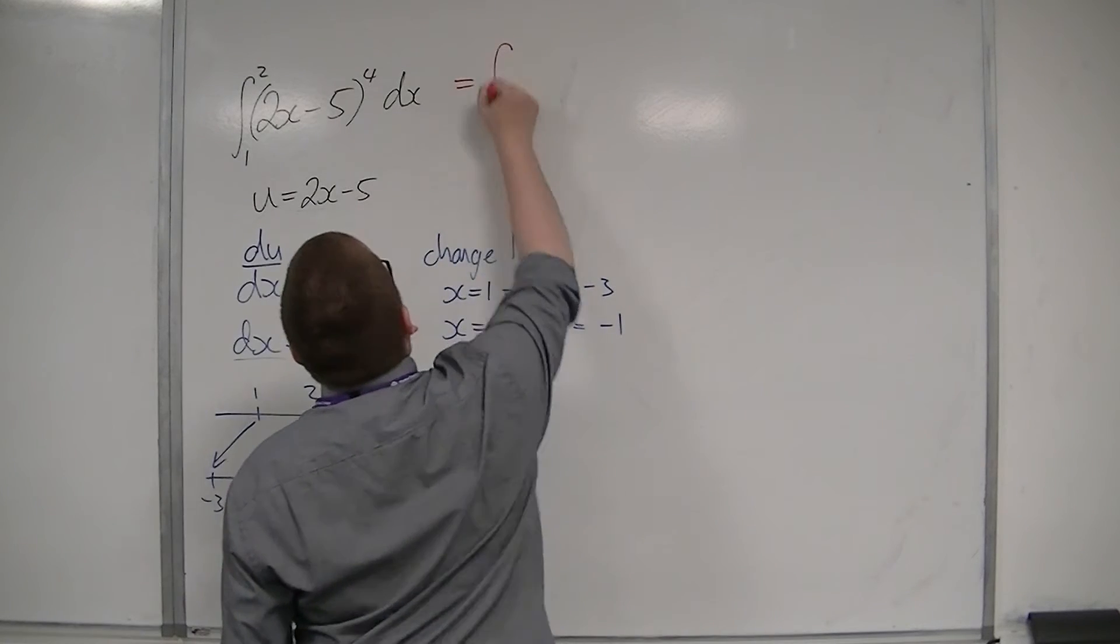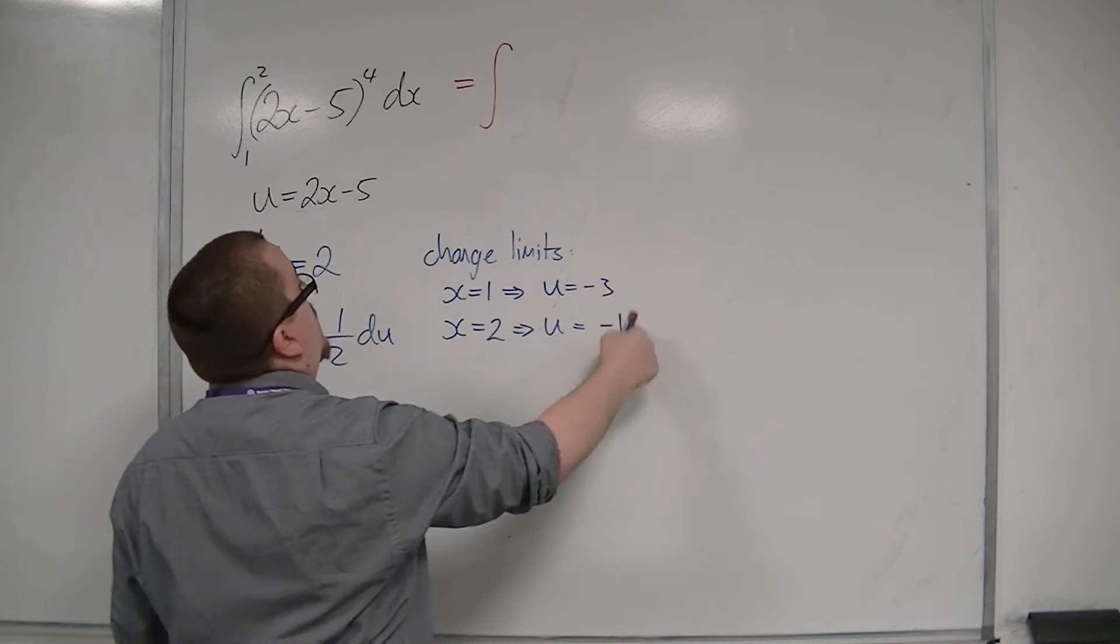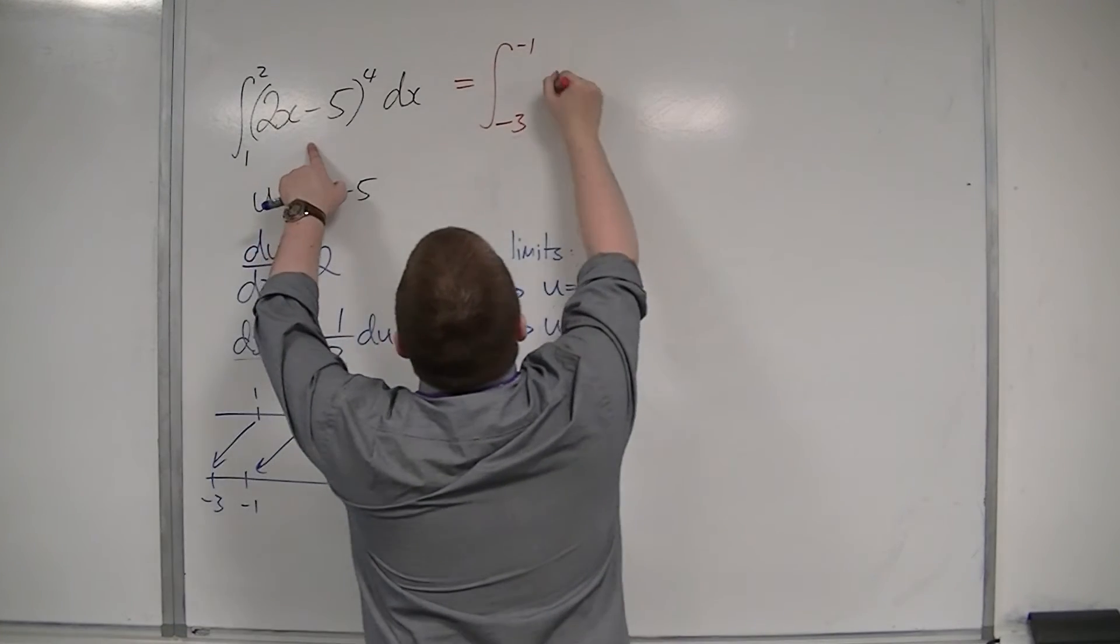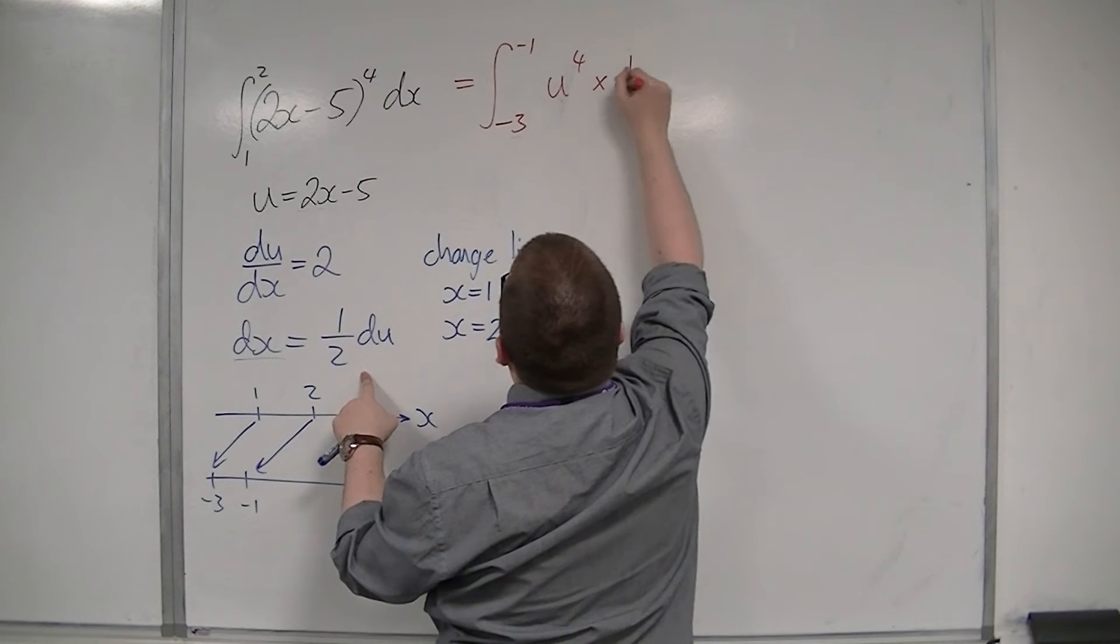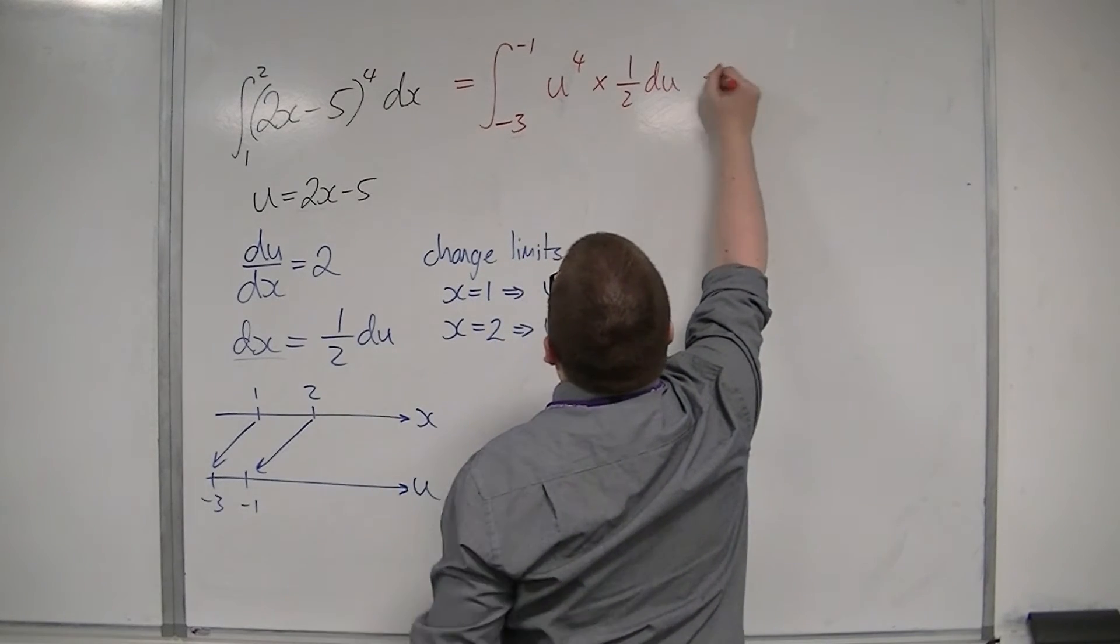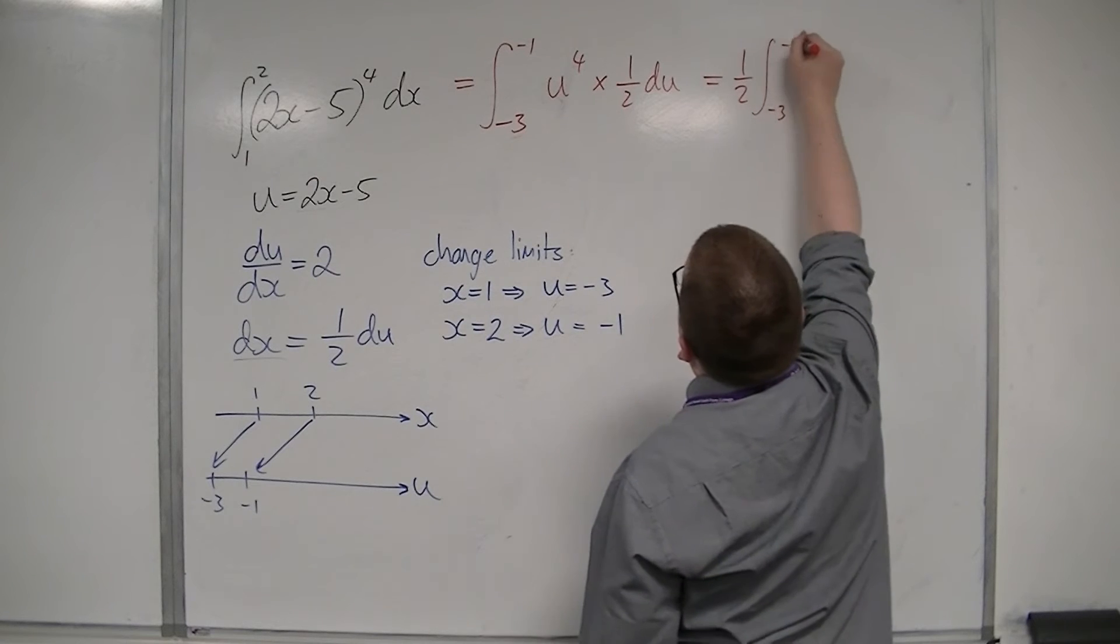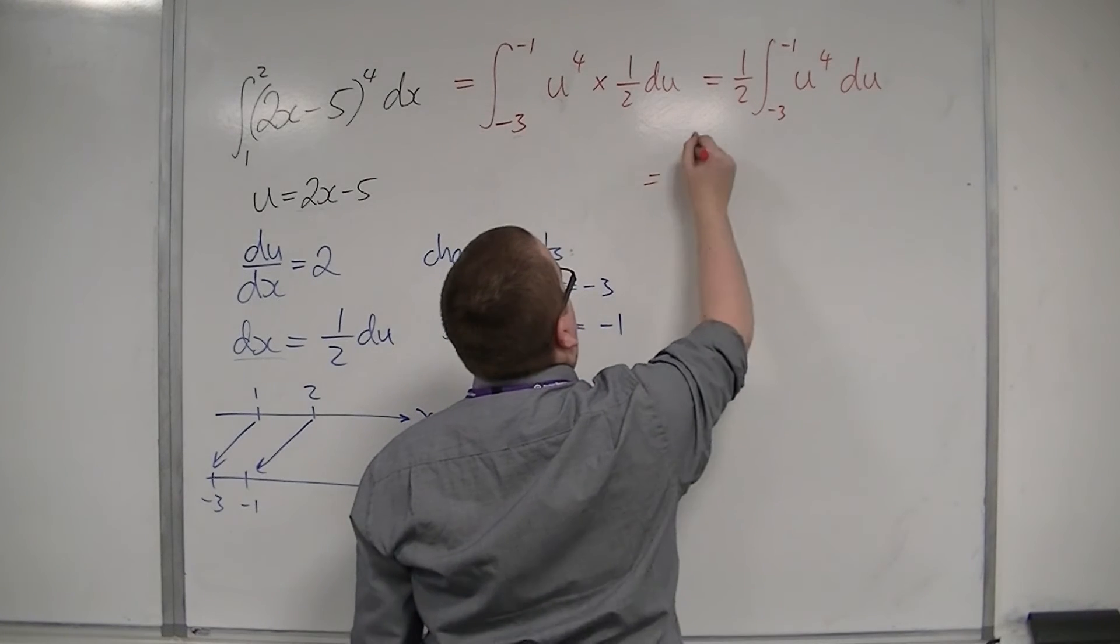So, what I've now got is an integral between minus 3 and minus 1. Well, I've now got u to the 4, and dx was replaced with 1 half du. So, I can pull the half out of the front.